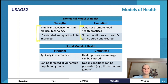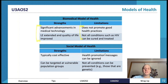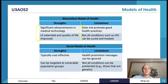For the social model of health, a strength is that it's typically cost effective because we can target a lot of people at once. We can also target the vulnerable population group — the people that really need health promotion. Limitations: health promotion messages can be ignored; even if we target a specific group, they may not take in the message. Also, not all conditions can be prevented — genetic diseases can't be prevented through health promotion.